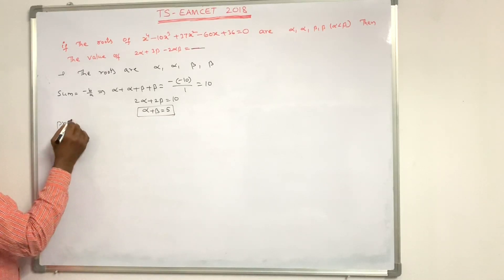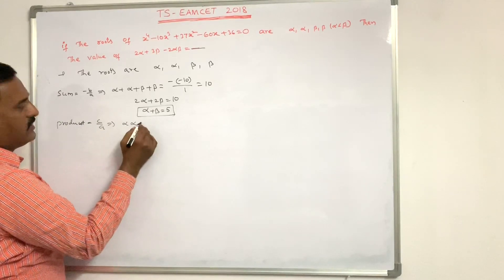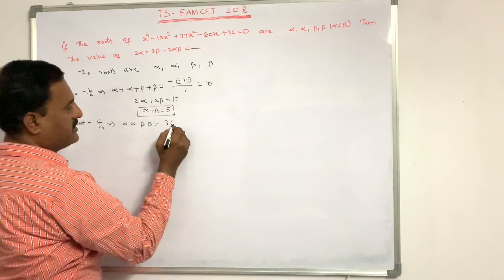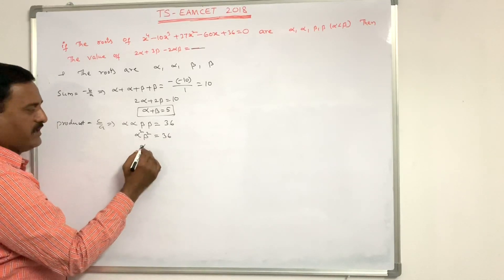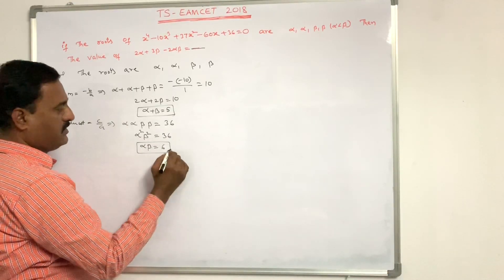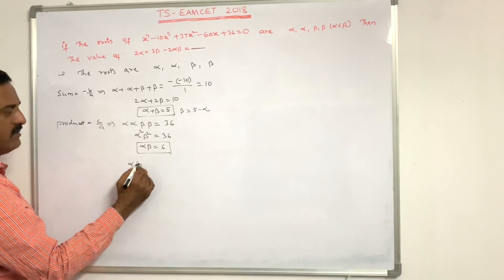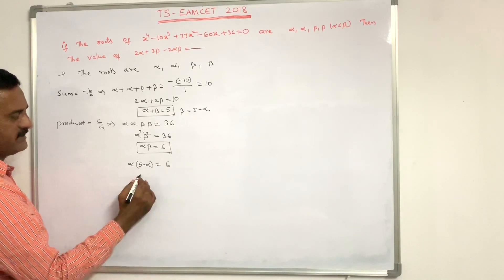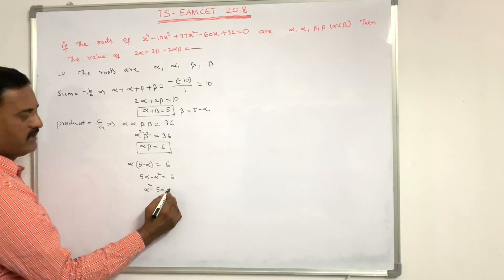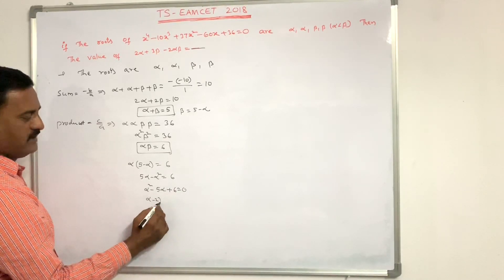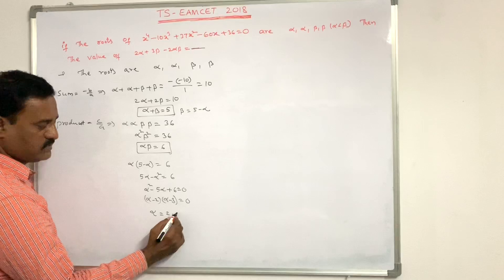The product of the roots: α·α·β·β = c/a = 36, so α²β² = 36, therefore αβ = 6. From α + β = 5, we get β = 5 - α. Substituting: α(5 - α) = 6, giving 5α - α² = 6, so α² - 5α + 6 = 0. Factoring: (α - 2)(α - 3) = 0, giving α = 2 or α = 3.